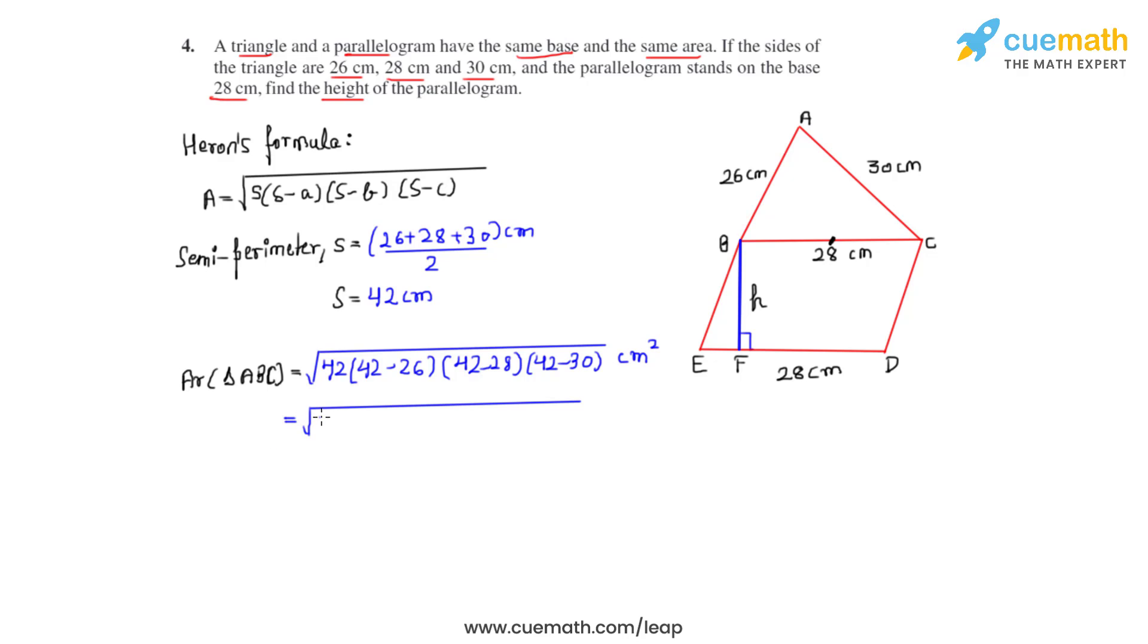This on further calculation comes as under root 42 times 16 times 14 times 12 centimeter square. This on further calculation gives us that the area of triangle ABC equals 336 centimeters square.